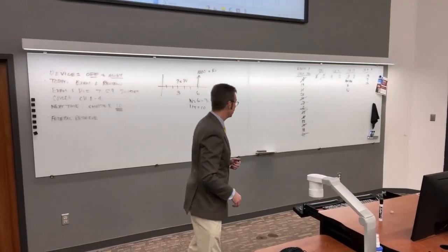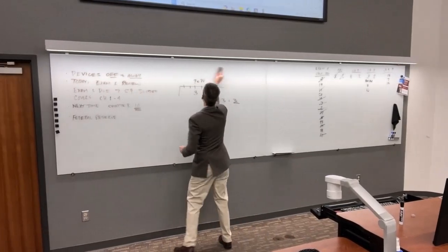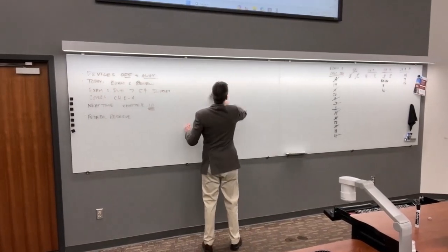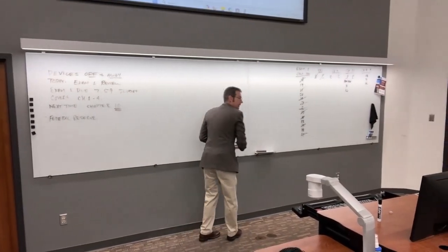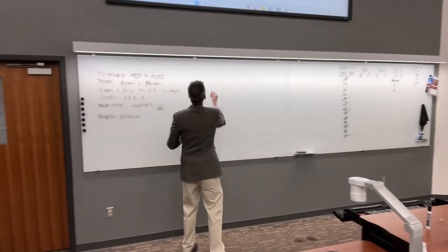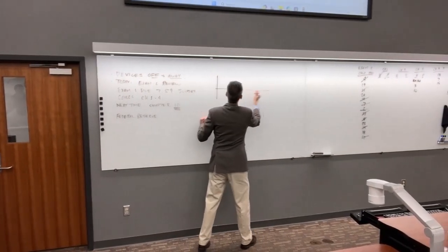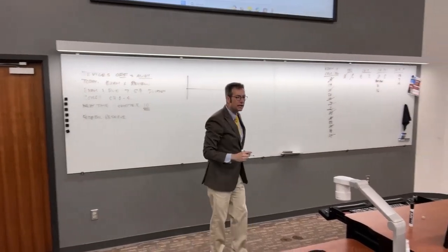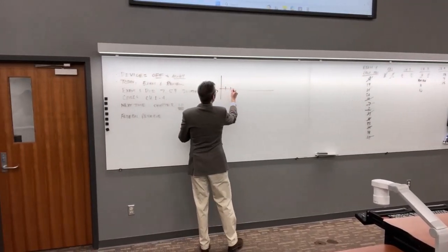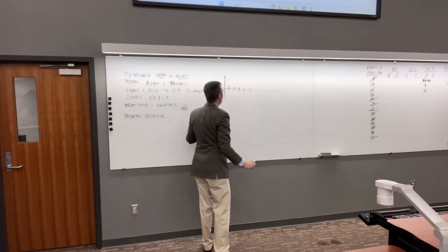If interest rates are 6% a year, what's the combined present value of these cash flows? Let's map out the cash flows. We're going out five years: 1, 2, 3, 4, 5.